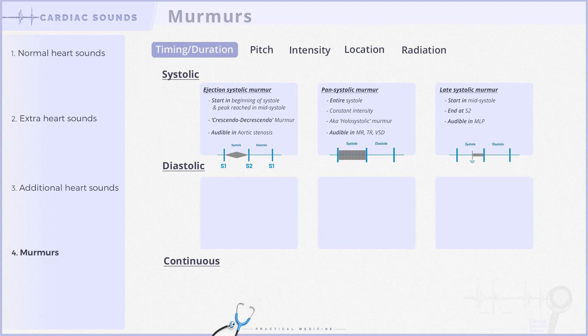Let's move on to diastolic murmurs, which can be categorized as early diastolic, mid-diastolic, and late diastolic murmurs. Early diastolic murmurs occur at the beginning of ventricular diastole, just after S2. They are typically associated with aortic or pulmonary regurgitation. Incompetent valves cannot prevent blood from flowing back into the ventricles, thus producing turbulence and an early diastolic murmur.